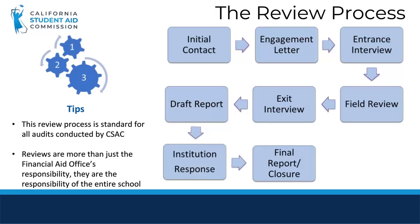Now that we have covered reconciliation, we are going to briefly cover the program compliance process an institution may face if they are selected for a reconciliation review. The first step is the initial contact. The school will receive a phone call from an auditor approximately two to three months prior to the scheduled field or desk review date. The auditor will provide school staff with the date of the review, the academic year, and the programs that will be reviewed. The compliance review is an institution-wide responsibility that usually includes the admissions and records and accounting office.